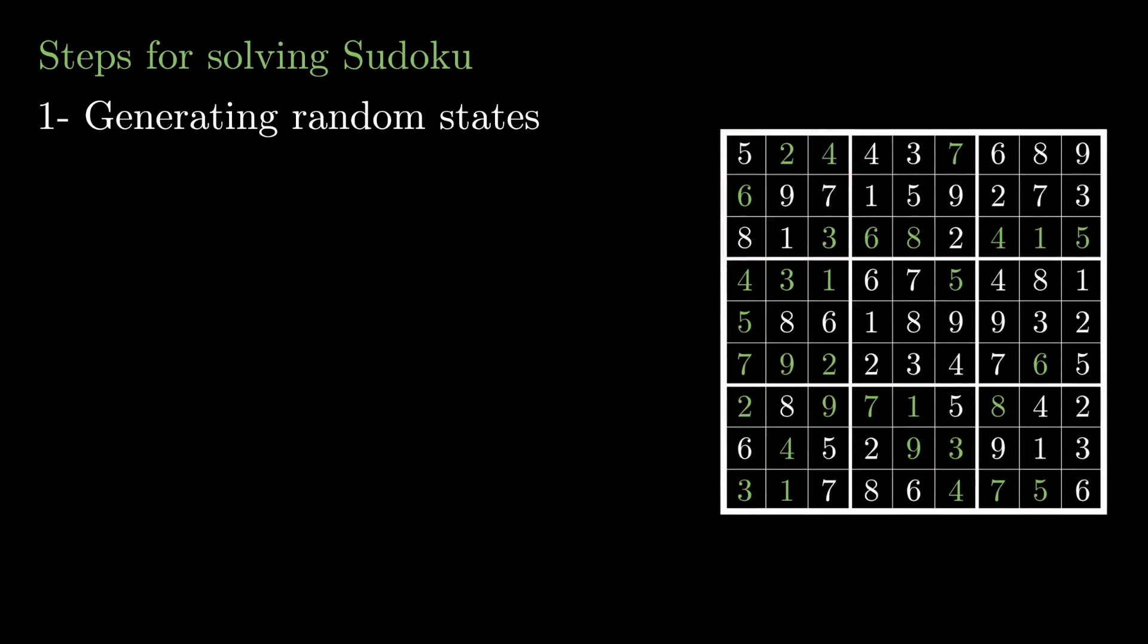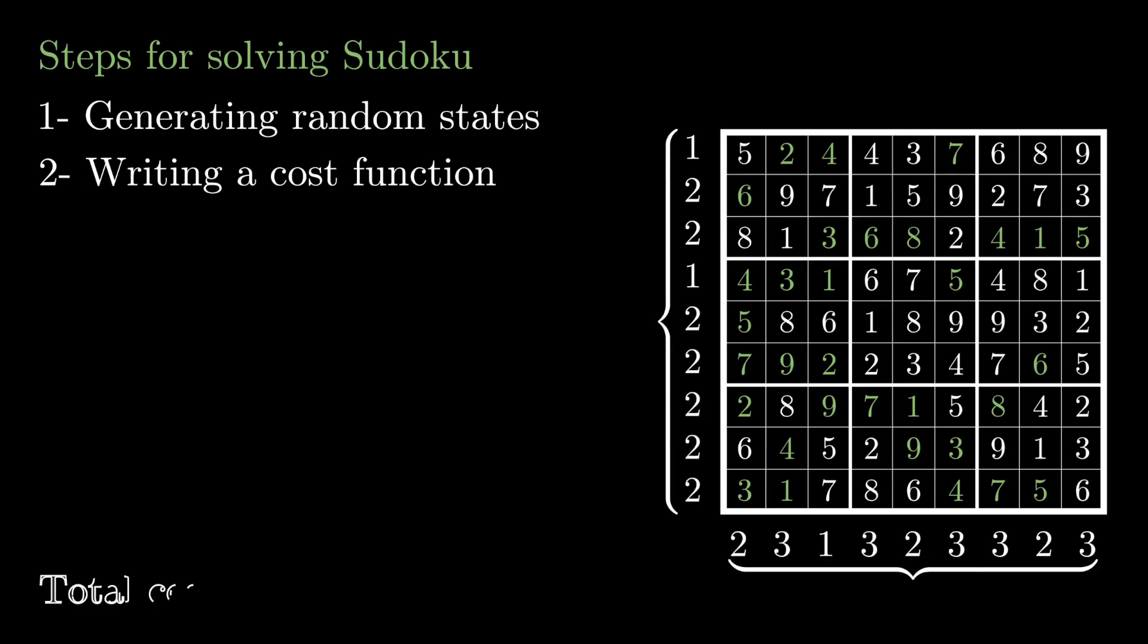But how will we know if this state is better than the other one? Well, we'll have a cost function. And this cost function will calculate the sum of the duplicates along the rows and the columns of the Sudoku. And at this state, the total cost is 38. And we're trying to bring this cost down to zero, which means that there are no duplicates along the rows or the columns. And that means that the Sudoku is solved.